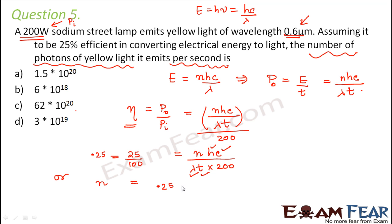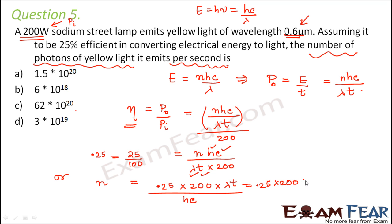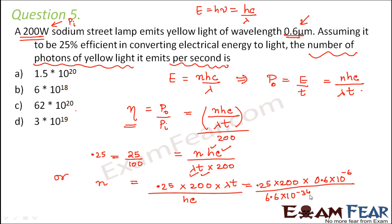So 25/100 is 0.25. N will be equal to 0.25 times 200 times lambda times t divided by Hc. Putting in the values: 0.25 times 200 times lambda equals 0.6 micrometers, which is 0.6 times 10 to the power minus 6 meters, and t equals 1 second. Divided by H equals 6.6 times 10 to the power minus 34, times c equals 3 times 10 to the power 8. This approximately comes out to be 1.5 times 10 to the power 20. So A is the right option.